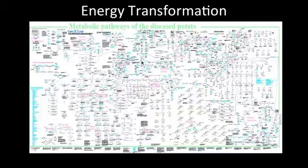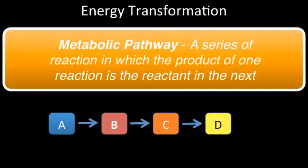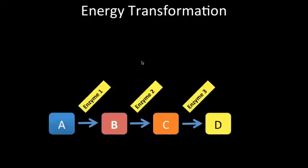They can be quite a complicated mess of interconnected reactions. Here's a schematic of a metabolic pathway of a potato disease. Don't worry, we won't be studying metabolic pathways in such detail. To simplify this we describe a metabolic pathway as a series of reactions starting with a specific molecule which is then altered in a series of steps ultimately resulting in a certain product. It's important to know that each individual reaction in the pathway is catalyzed by a specific enzyme.